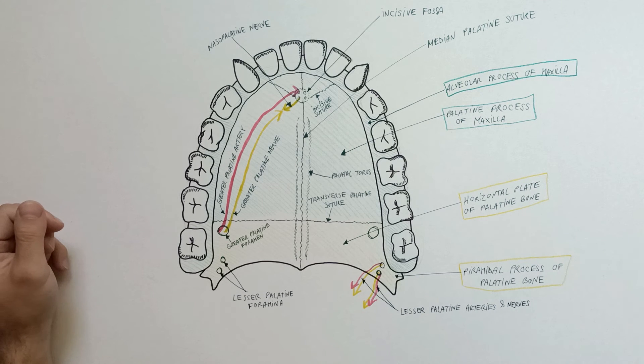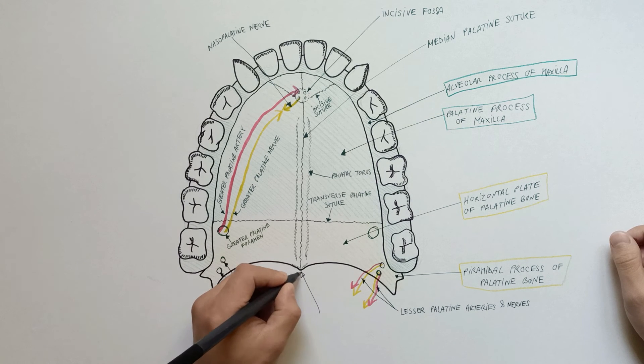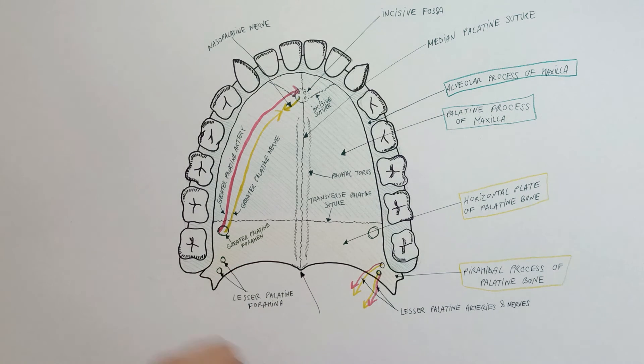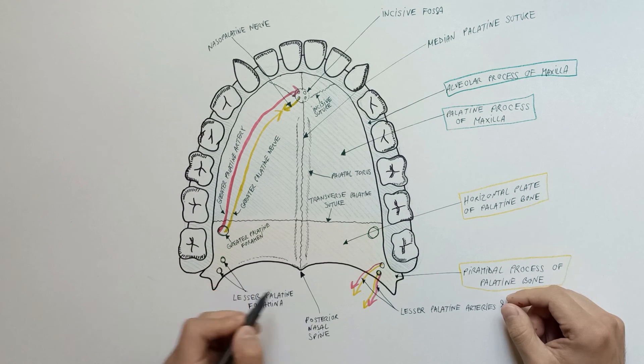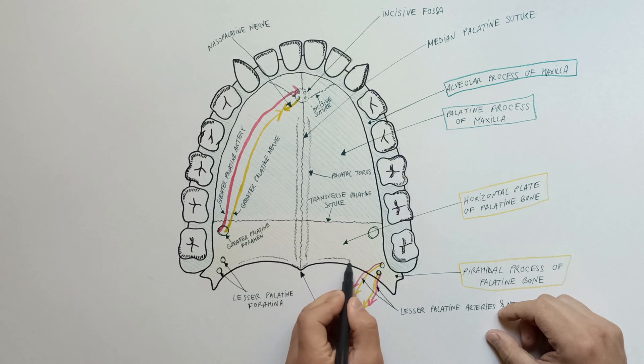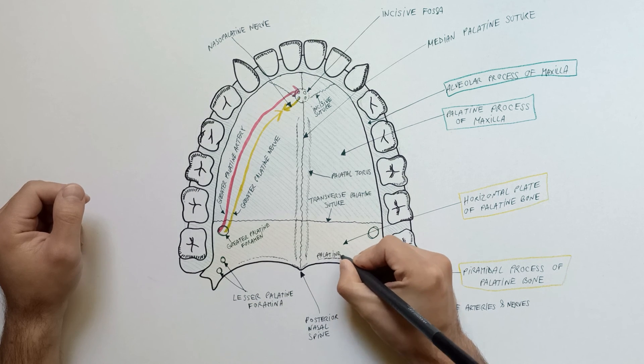Two significant bony features are also present in the posterior part of the hard palate: a conical projection in the median plane on the sharp free posterior border of the hard palate called the posterior nasal spine, and the palatine crest, the curved ridge near the posterior border of the hard palate.